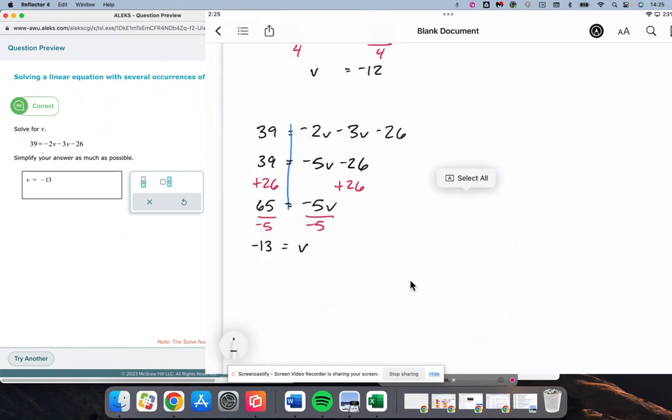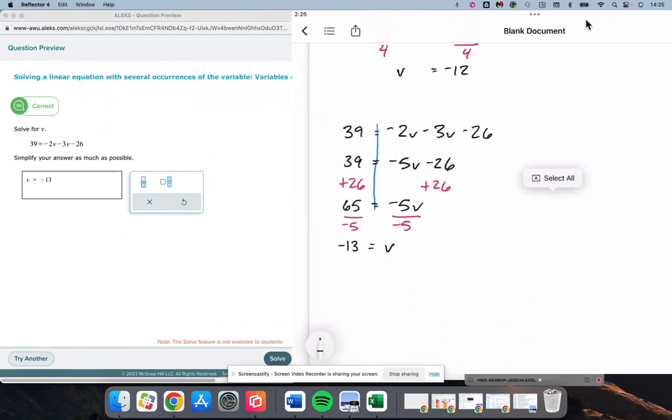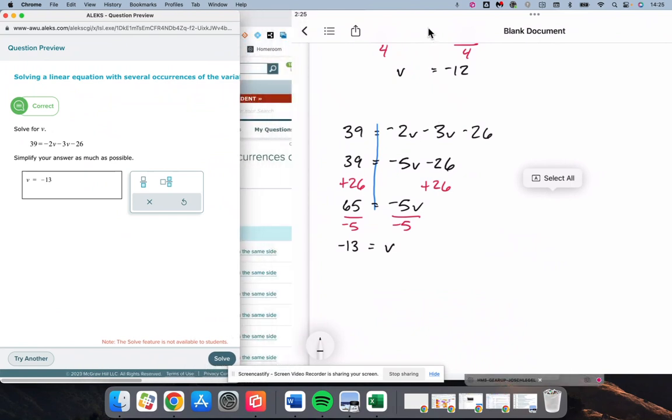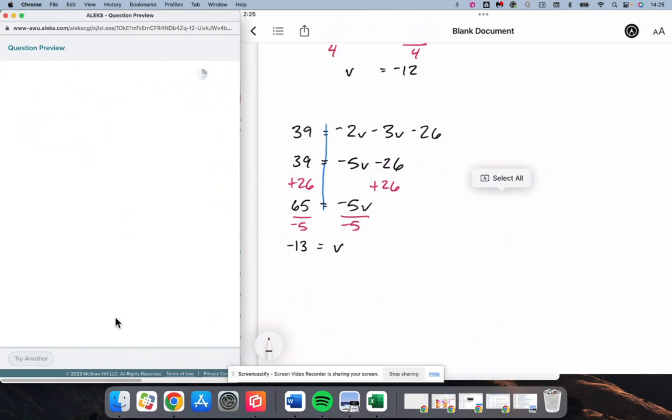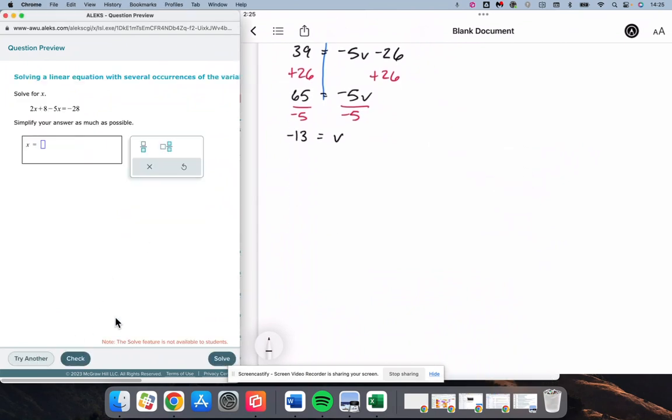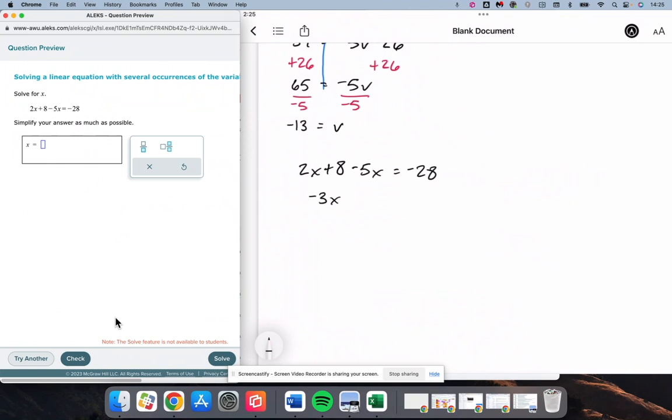All right. I'll leave that there for a moment so you can see that. I'll shorten this guy up here. On to the next, we do have 2x plus 8 minus 5x is equal to negative 28.